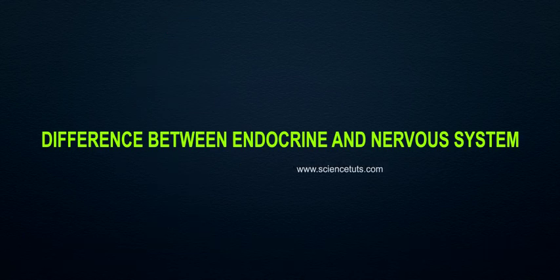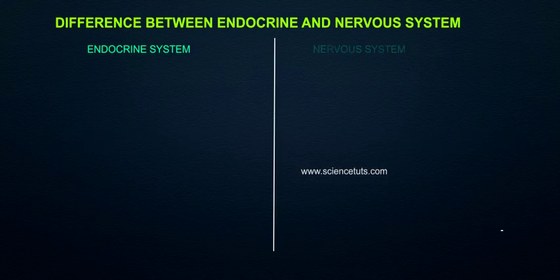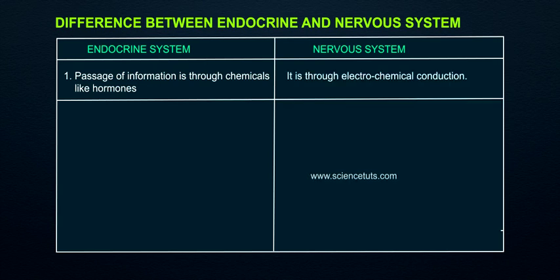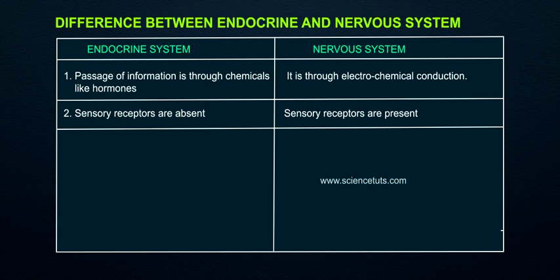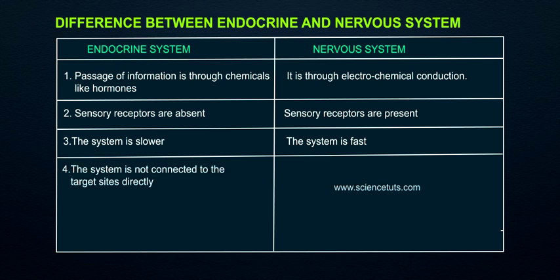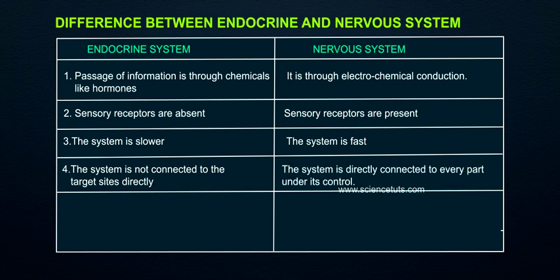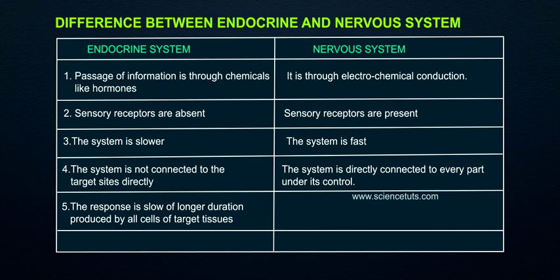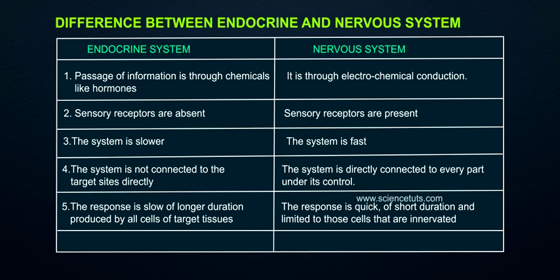Difference between the endocrine and nervous system. In the endocrine system, passage of information is through chemicals like hormones; in the nervous system, it is through electrochemical conduction. Sensory receptors are absent in the endocrine system but present in the nervous system. The endocrine system is slower; the nervous system is fast. The endocrine system is not directly connected to target sites, while the nervous system is directly connected to every part under its control. The response of the endocrine system is slow, of longer duration, and produced by all cells of target tissues; the nervous system response is quick, of short duration, and limited to innervated cells.